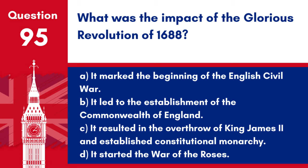Question 95. What was the impact of the Glorious Revolution of 1688? a. It marked the beginning of the English Civil War. b. It led to the establishment of the Commonwealth of England. c. It resulted in the overthrow of King James the Second and established constitutional monarchy. d. It started the War of the Roses. Answer: c. The Glorious Revolution of 1688 solidified parliamentary sovereignty and the principles of constitutional monarchy in Britain.